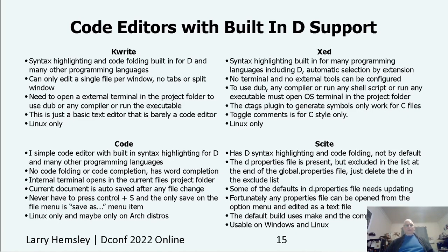Now we're going to talk about some other code editors that have built-in support for D. However, they were started as text editors for many other languages, but they do have built-in support for D, which includes syntax highlighting and code folding built in for D and many other programming languages. The first one is KWrite, which is a Linux-only code editor. You can only edit a single file per window — there are no tabs or split windows. You need to open an external terminal in the file's folder to use dub or compilers. Xed is also a Linux-only editor with no internal terminal and no configurable external tools. The C tags plugin only works for C files.